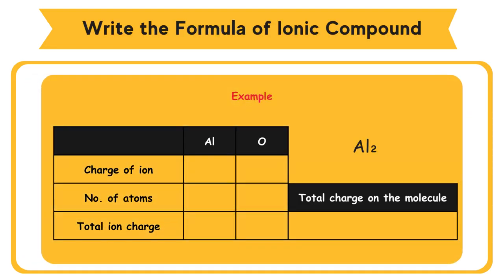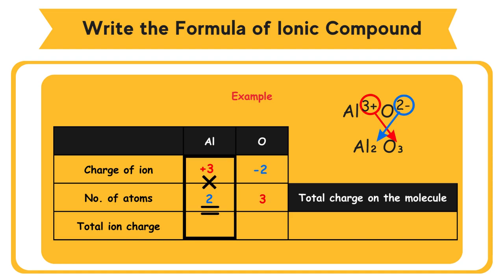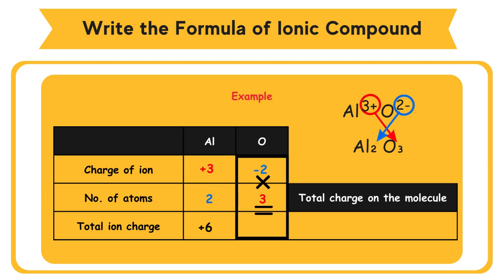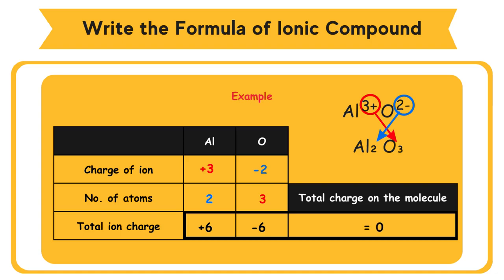Example: Al₂O₃ has Al³⁺ cation and O²⁻ anion. Take the 2 from O and use it as the subscript for Al; take the 3 from Al and use it as the subscript for O. The subscript numbers show the number of cations and anions. Total positive charge equals +6, total negative charge equals −6. So the formula is Al₂O₃.